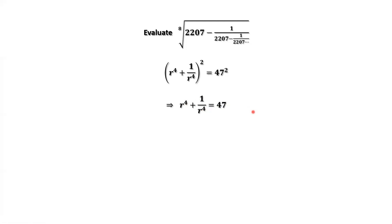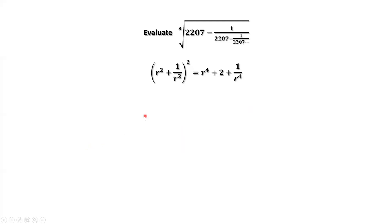Repeat the same procedure. We consider r squared plus 1 over r squared, then squared, equals r to the power of 4 plus 2 plus 1 over r to the power of 4. The sum of the first term and the last term equals 47. So this equals 47 plus 2, which is 49. 49 is 7 squared. Therefore, r squared plus 1 over r squared equals 7.